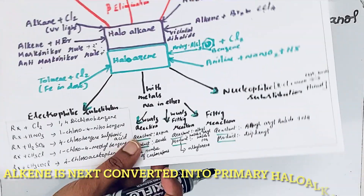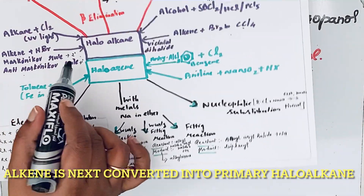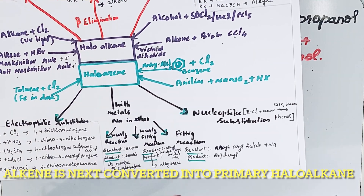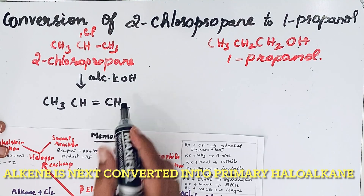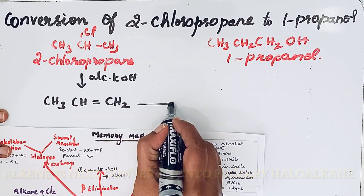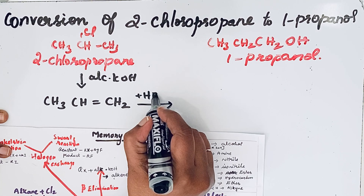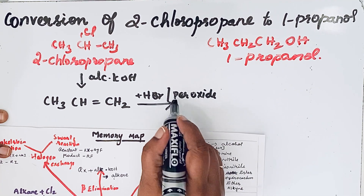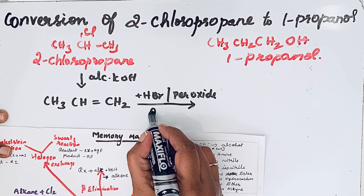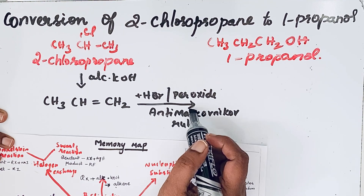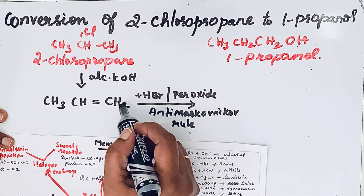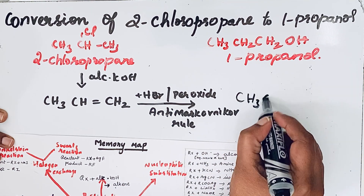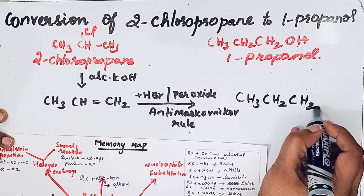The next step involves anti-Markovnikov's rule — if the product needed is secondary, use Markovnikov's rule; if primary, use anti-Markovnikov's rule. Anti-Markovnikov's rule takes place in the presence of peroxide, so we add HBr with peroxide effect. During anti-Markovnikov addition, the Br attaches to the primary position, giving us CH3-CH2-CH2Br (1-bromopropane).